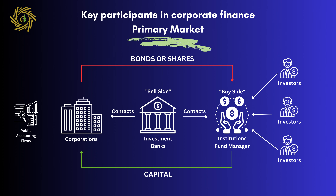Corporations are operating companies that require capital to grow and run their operations, while investors have money they want to invest in these companies. Capital flows from investors into corporations, and corporations issue bonds or shares in exchange. Facilitating these transactions is the investment bank, also known as the sell side, which brokers the deals to raise capital and issue shares back to investors using its relationships and contacts on both sides.